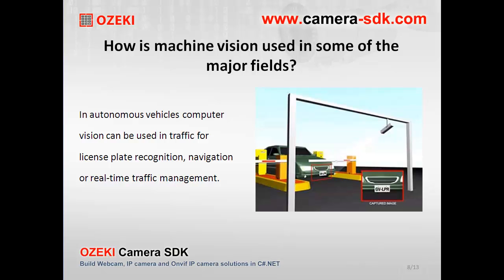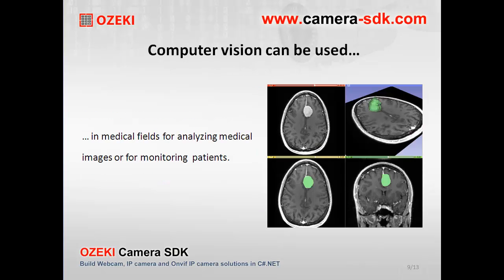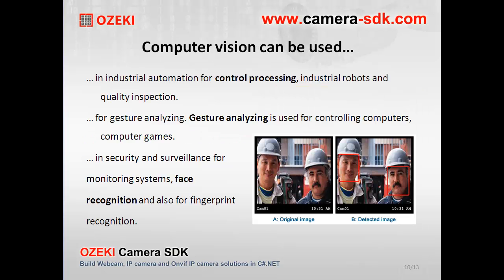The first field is autonomous vehicles, where computer vision is used for license plate recognition, navigation, and real-time traffic management. In medical fields, computer vision is used for analyzing medical images and for monitoring patients and their behavior. In industrial automation, computer vision is used for control processing, industrial robot maintenance, and quality inspection.